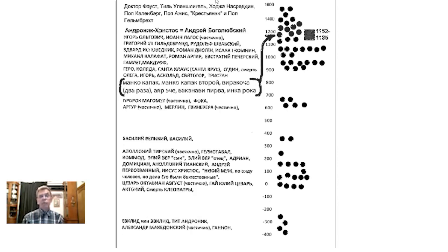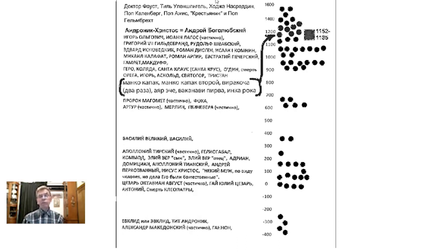In the course of our research, we discovered a significant number of duplicates of this great character in the history of humanity. Why are there so many duplicates? The larger the event, the more it generates its reflections on the pages of chronicles, in stories, legends, and tales. This biography has produced over a hundred duplicates — to date, 124 of them have been found. Even today we see this in modern life: significant events attract the attention of a large number of listeners and viewers through repeated discussions, stories on television, radio, and the Internet.